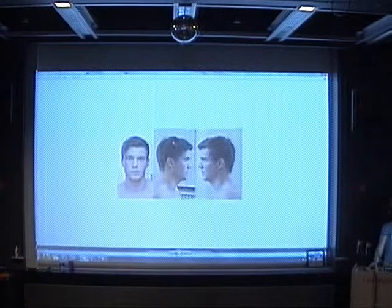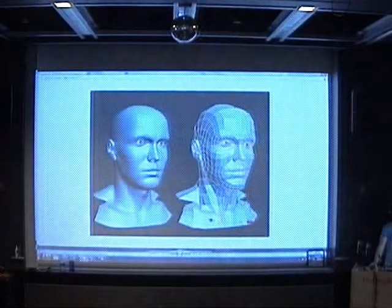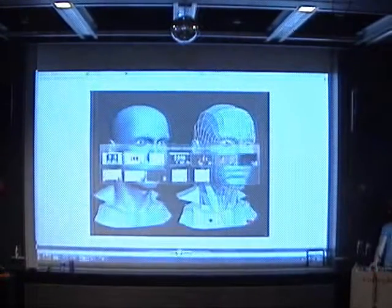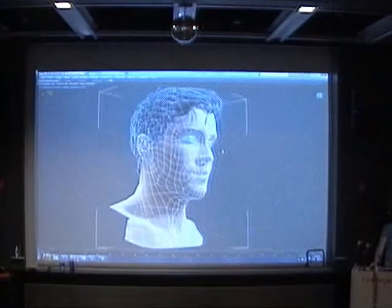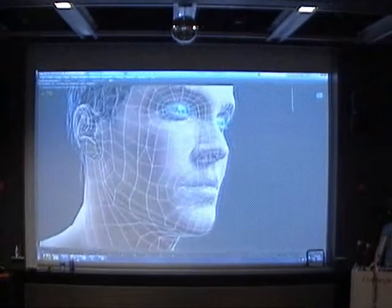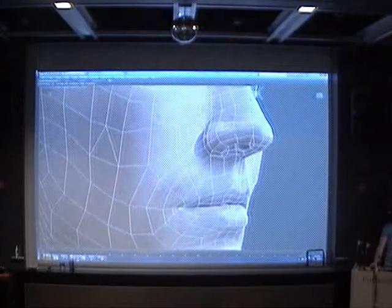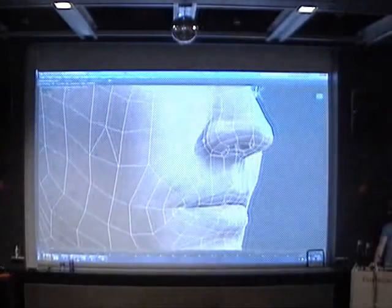So those were my reference images. I baked the high poly in X-Normal down to the low poly, which I made mostly by collapsing edges. You can see here in the high poly I would have two edges here.